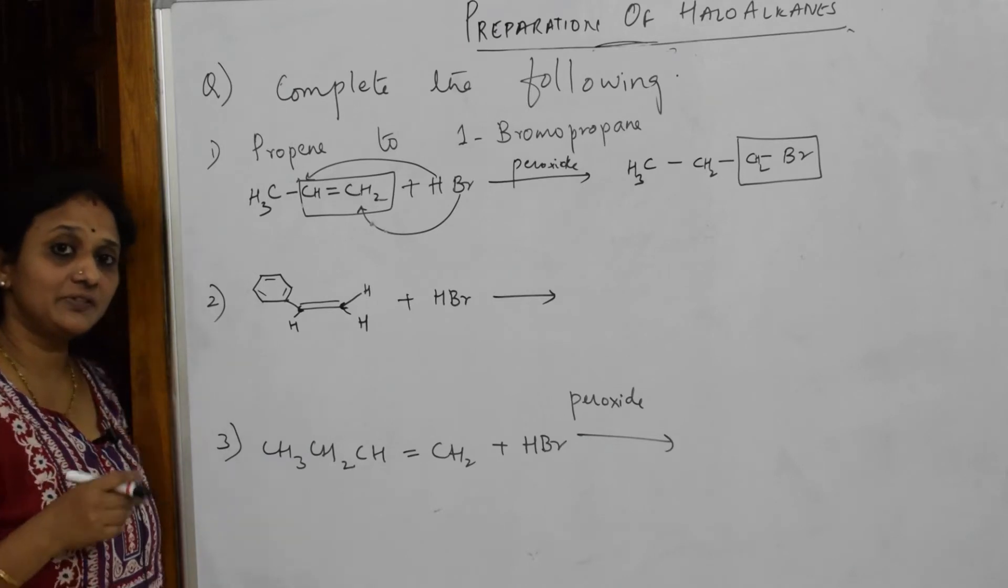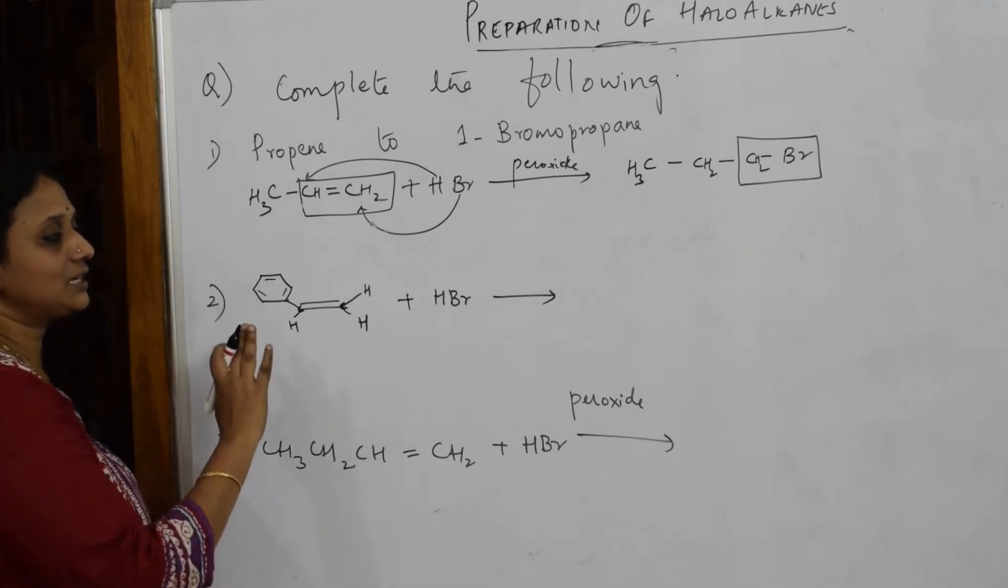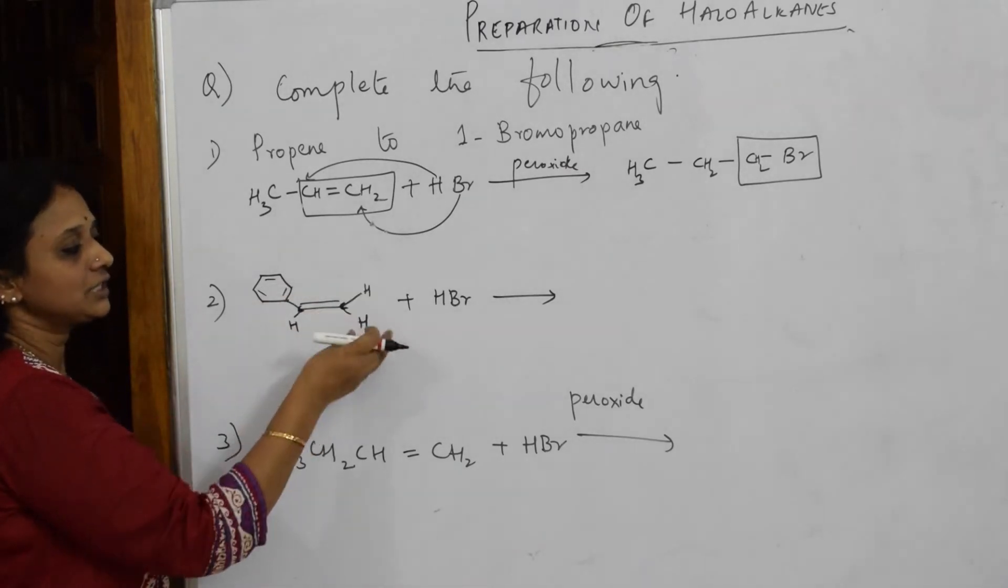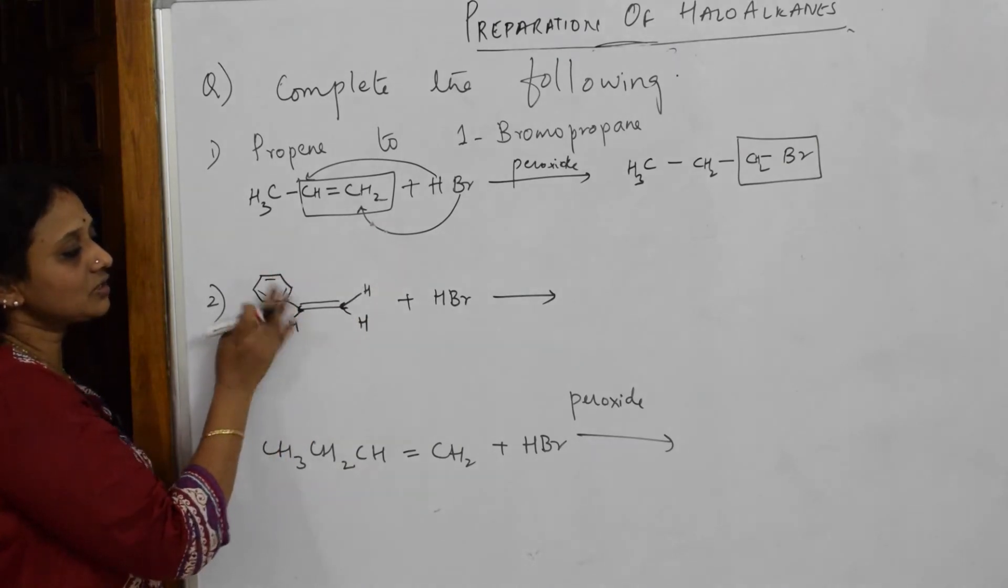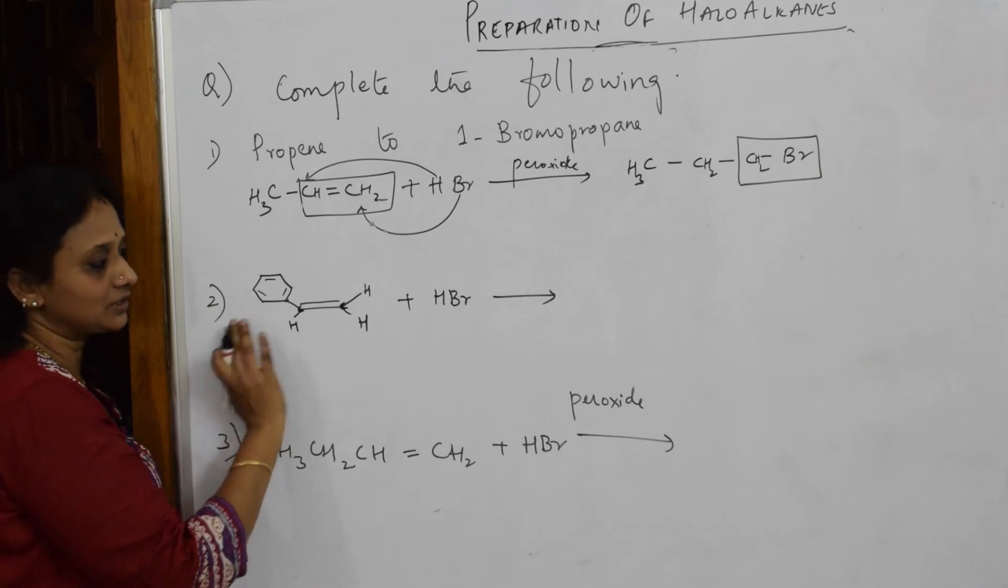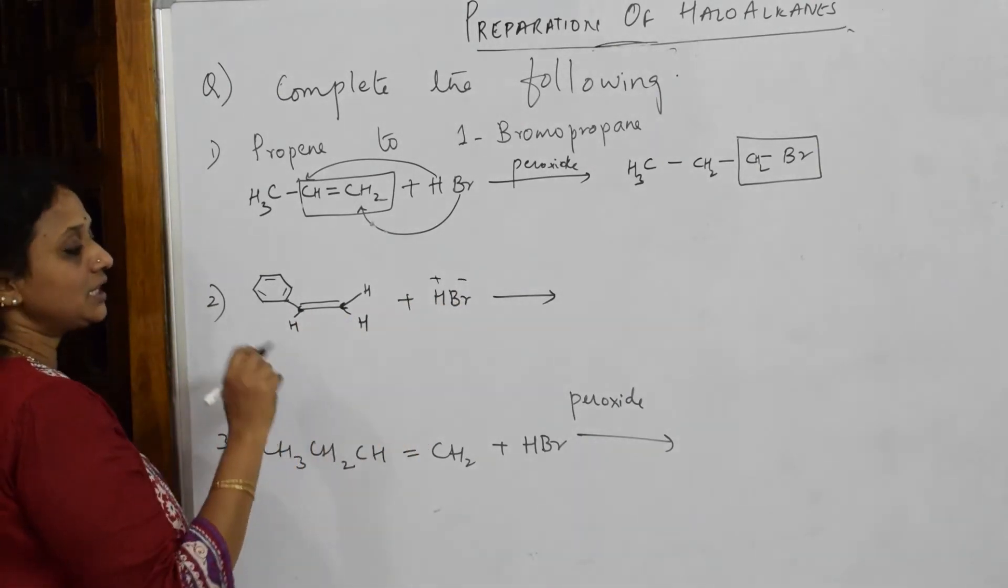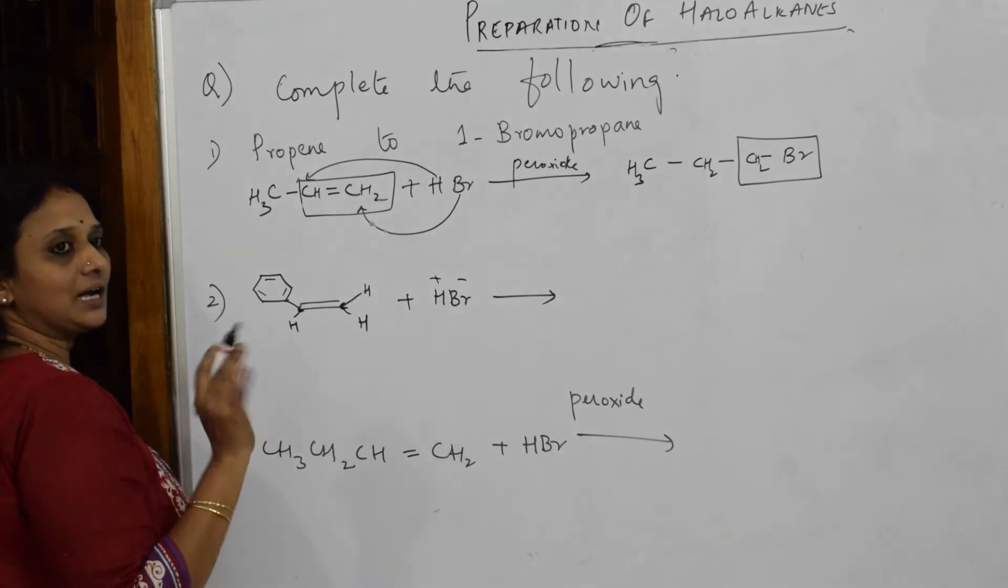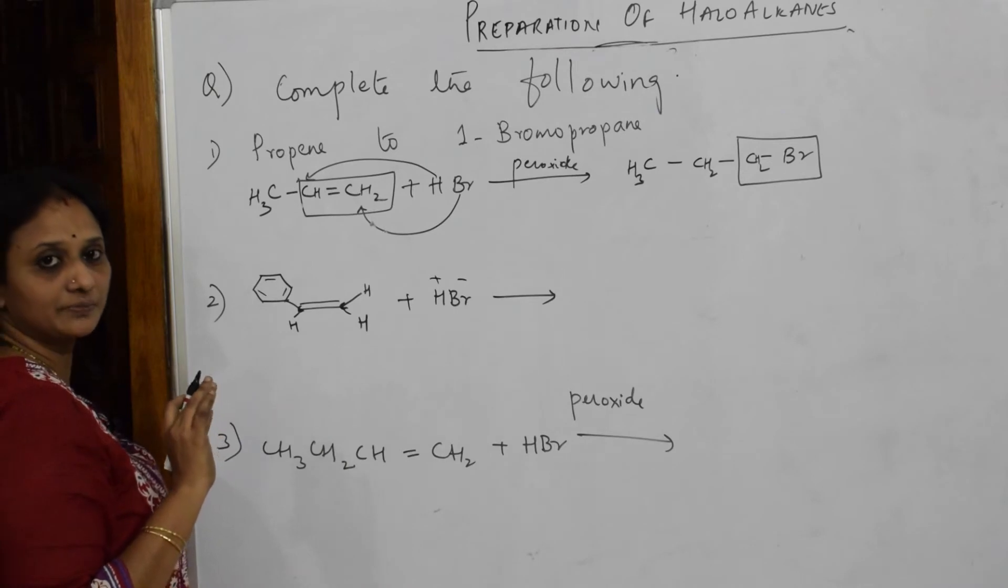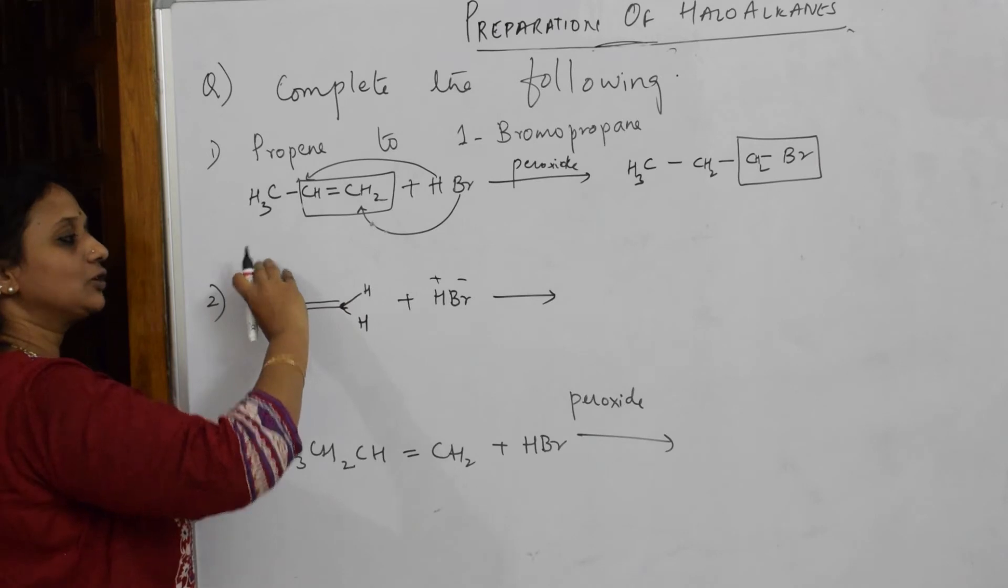Now first of all, I have to see whether it is symmetrical or unsymmetrical. Let us see how it is placed. This is your double bond. This carbon H and H. Done. Now this is your carbon. There is one benzene ring here, one hydrogen here. Done. Now according to the rule, this is plus, this is minus. The negative part adds to the carbon having less number of hydrogens.